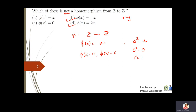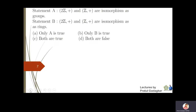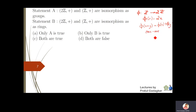The next question considers two statements. Statement A: 2Z and Z are isomorphic as groups. Consider phi from Z to 2Z given by phi(x)=2x. Then phi(x+y) = phi(x)+phi(y), so this is a group homomorphism, and it is one-to-one and onto. This means the first statement is true.